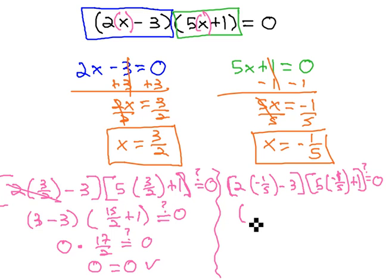The first factor, 2 times negative 1 fifth, is negative 2 fifths, minus 3. And the second factor, the 5's divide out, and we get negative 1 plus 1. Hopefully, that's 0. Negative 2 fifths, minus 3, is negative 17 fifths.